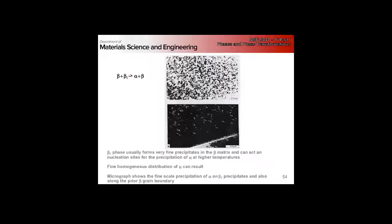A student asks whether the light zone near the grain boundary is a precipitate-free zone. We do see Widmanstätten alpha nucleating at the grain boundary, but this region likely results from alpha stabilizers diffusing to the grain boundary, acting as a sink — so we basically have a precipitate-free zone because the grain boundary acts as a sink for alpha stabilizers. The instructor will come back with a full clarification on Friday.